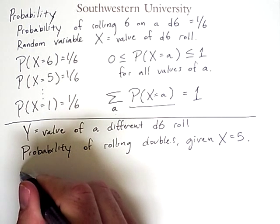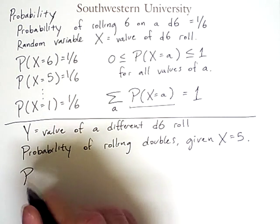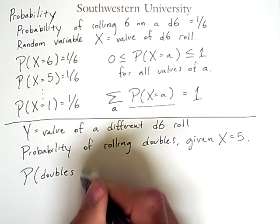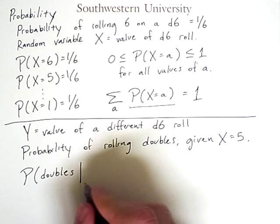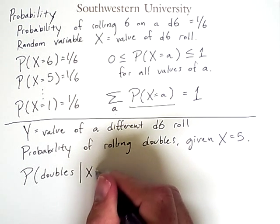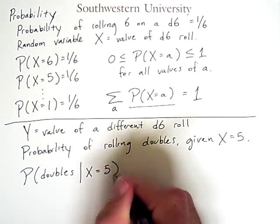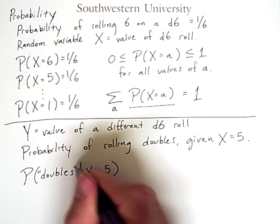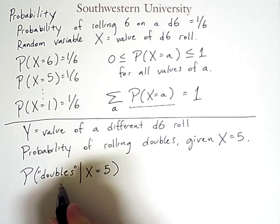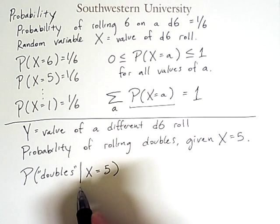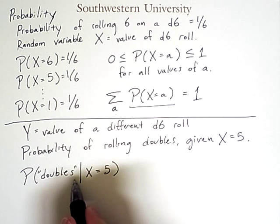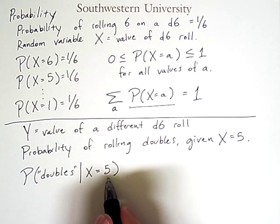Now, we can express this by saying, what is the probability of doubles? And then we use a vertical bar to indicate given X equals 5. Now, the use of doubles here is sort of nebulous and ill-defined. We'll clarify this in a moment. But what I want to focus on now is this vertical bar, which means given. This is a conditional probability. This is the probability of this outcome, assuming this outcome happens.